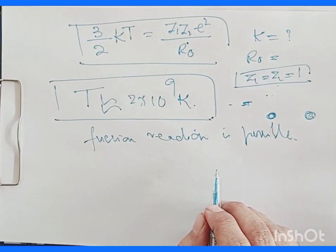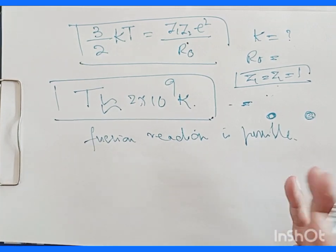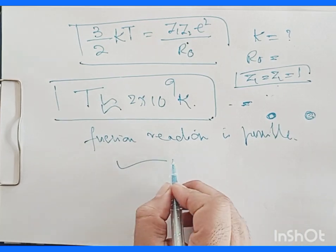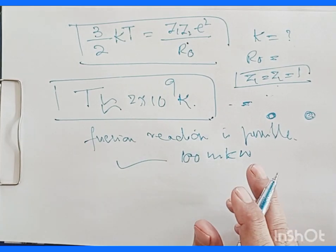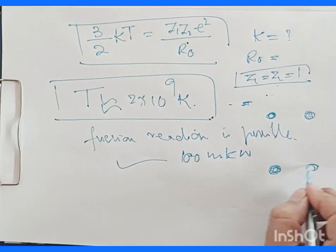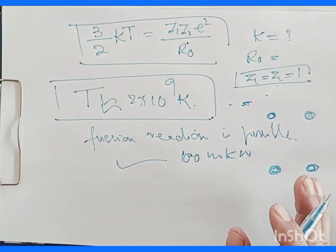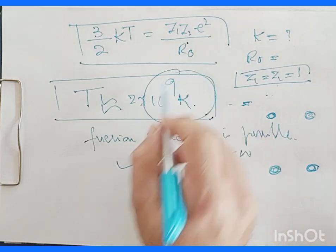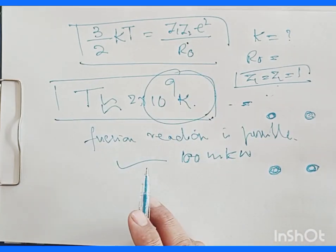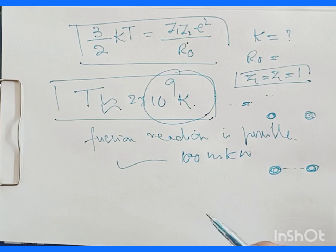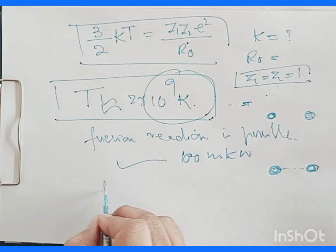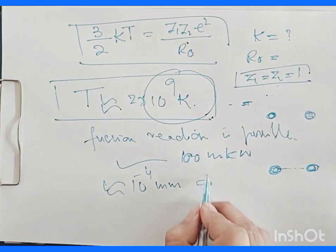The deuterons will react with one another and energy will be produced of the order of a hundred million kilowatts. To make the reaction self-sustaining between the combination of these deuterons, we must have a temperature of the order of 10⁹ kelvin. To keep energy output constant, the reaction must be controlled, and the starting pressure of the gas should be of the order of 10⁻⁴ mm of mercury.